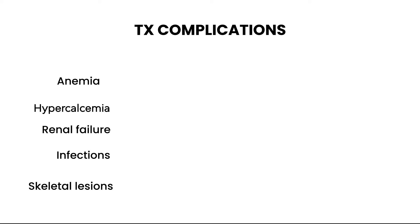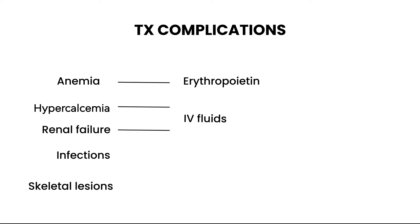The complications include anemia, hypercalcemia, renal insufficiency or renal failure, infections, and skeletal lesions. For anemia, erythropoietin can be given as an injection to help build red blood cells. Hypercalcemia and renal failure are treated with IV fluids — hydration is a very important part. Infections are treated with antibiotics. Skeletal lesions are treated with the bisphosphonate medication pamidronate, which helps slow bone loss and puts calcium back into the bone.